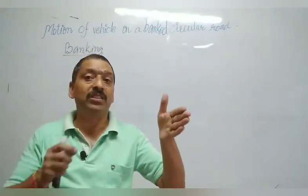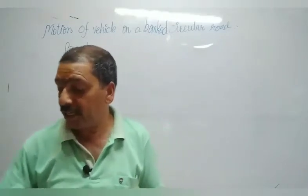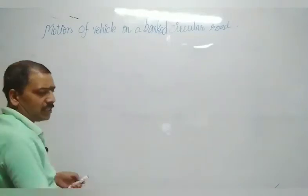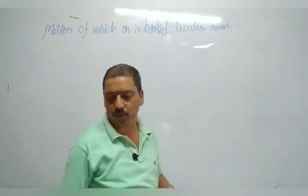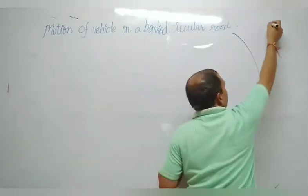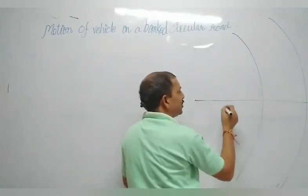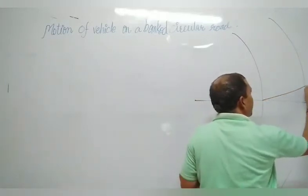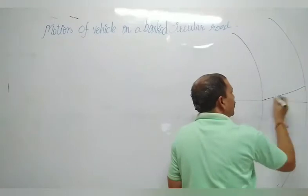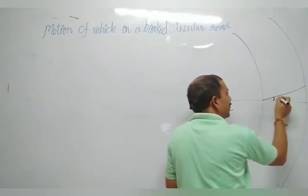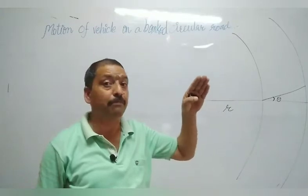Let us consider a curved banked road. This is a curved road with radius R. We have raised the outer edge of the road so that it is banked. The angle by which the road is raised is called the angle of banking, denoted by theta (θ).